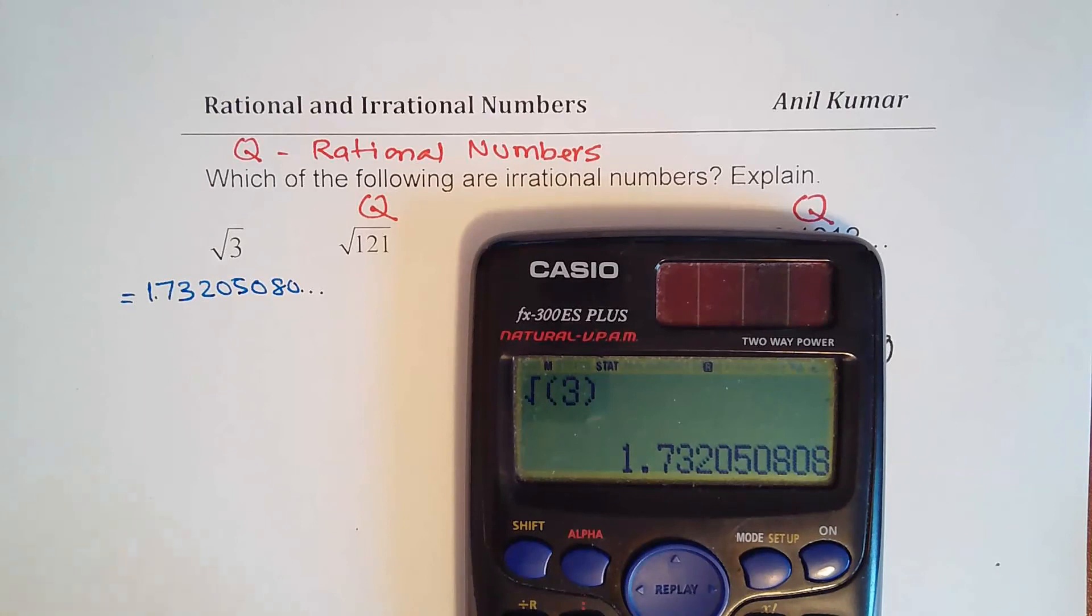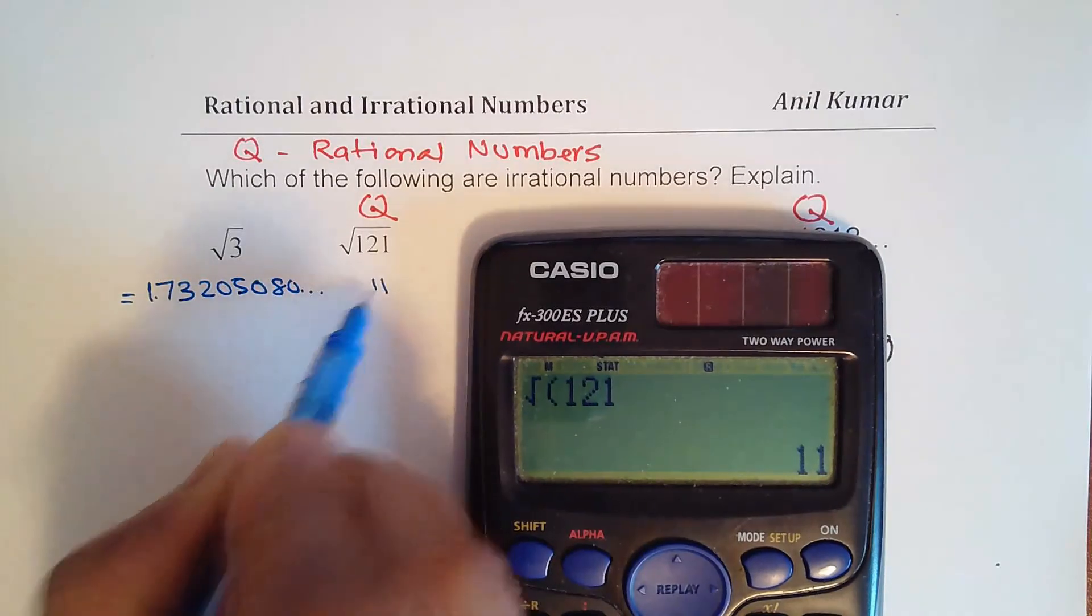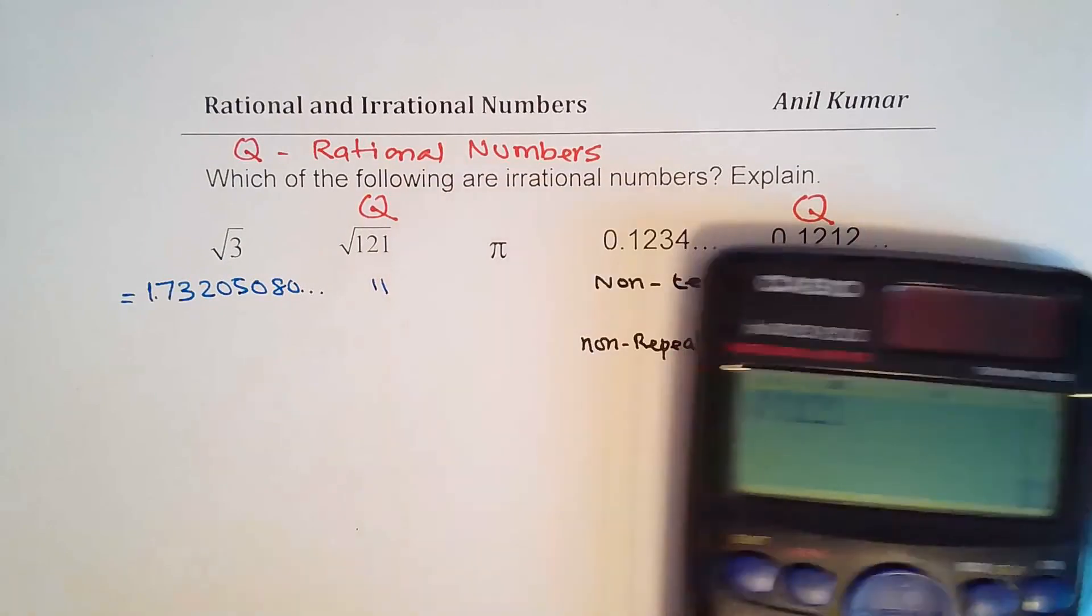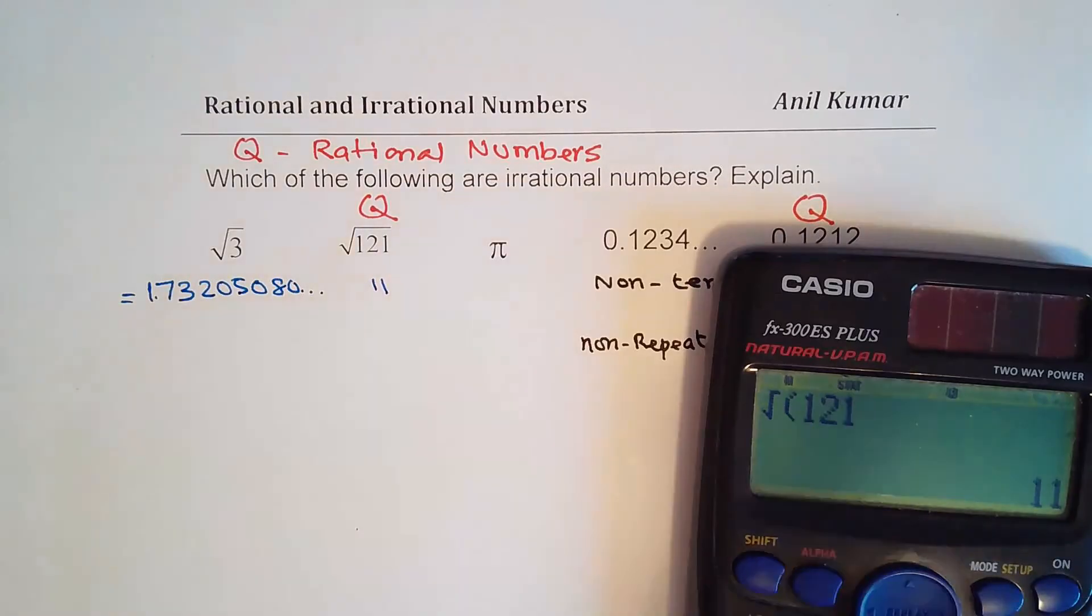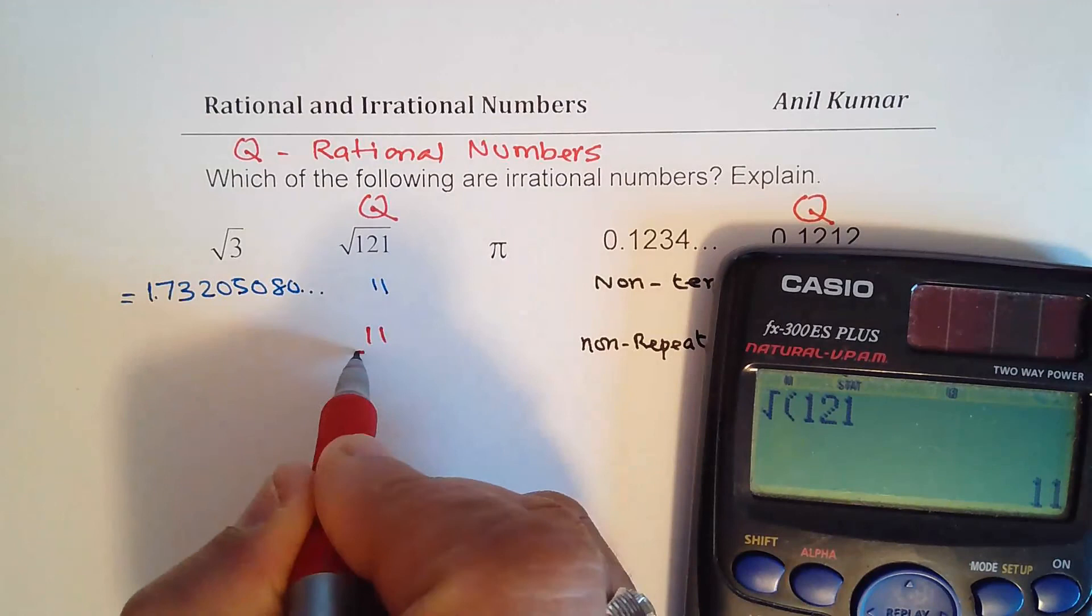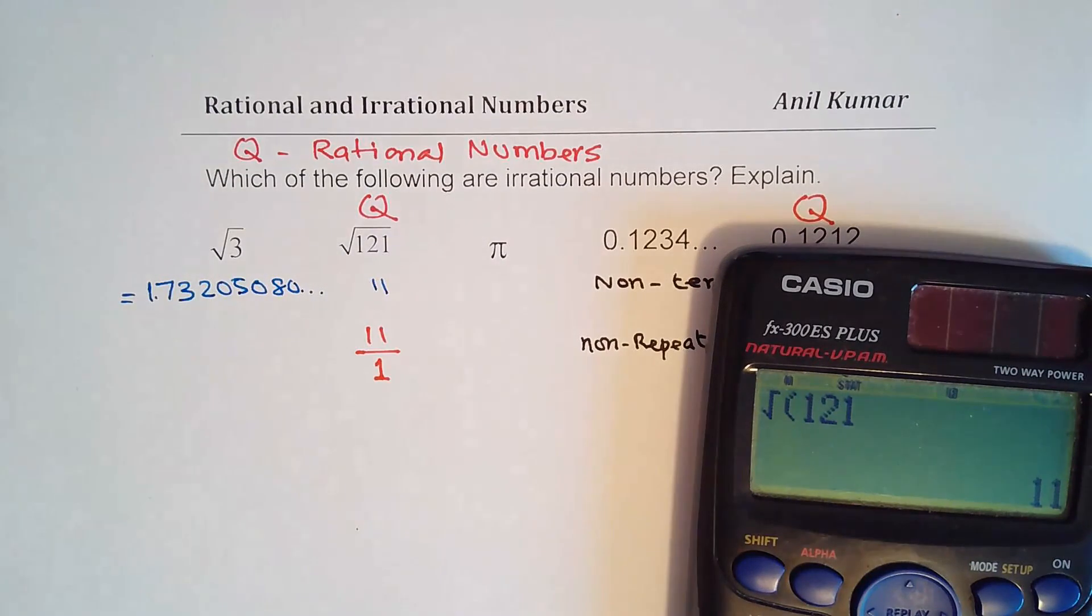Now let me calculate what is square root of 121, right? So as you know, it is 11. So 11 could be written as a rational number. Of course, I can write 11 as 11 over 1. So it becomes a rational number. I'm able to write it as P over Q where Q is not 0.